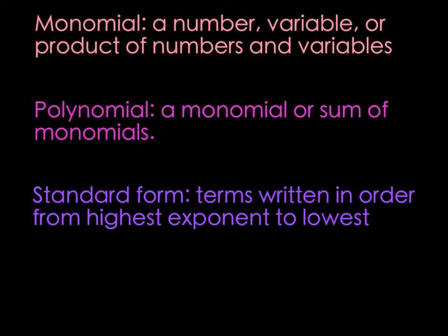The next one we have is a polynomial. A polynomial — poly means many — is a monomial, or a sum of monomials. So x would be considered a polynomial. x plus 5, 2x plus 7, x squared plus 3x plus 2 — any of these are polynomials.